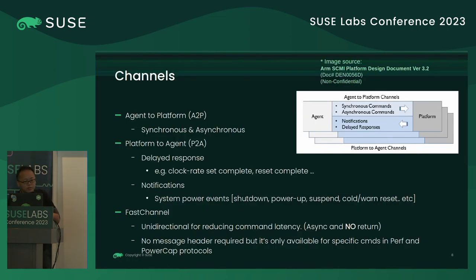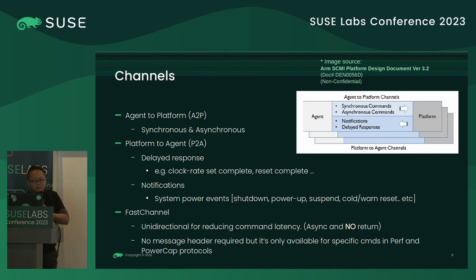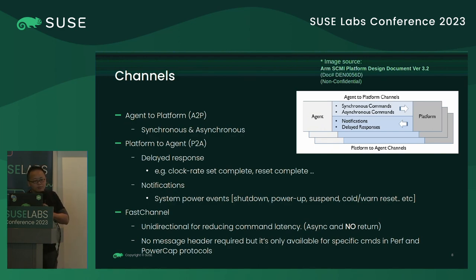Before introducing communication models, let me cover some basic ideas. There are two basic channels SCMI uses. Agent-to-platform means a message sent from the agent to the platform — usually synchronous or asynchronous. Platform-to-agent is used when the platform firmware needs to reply to the agent, or when critical events need to be raised so the agent is aware of them.